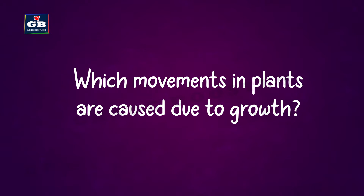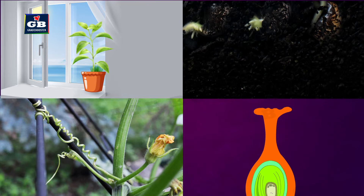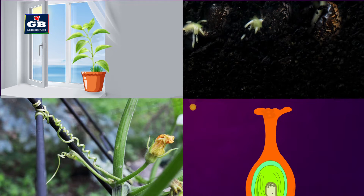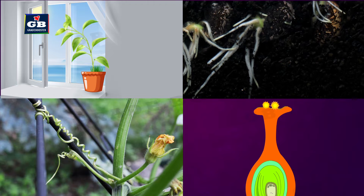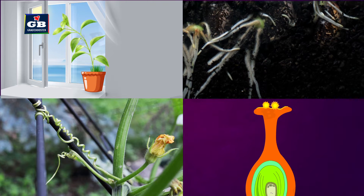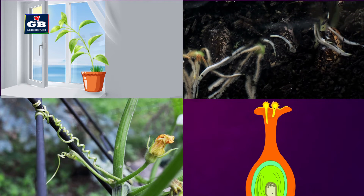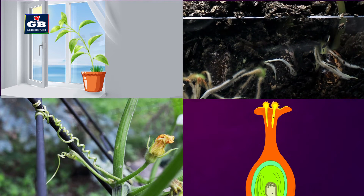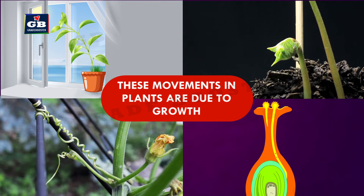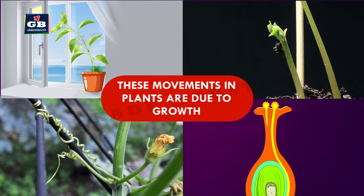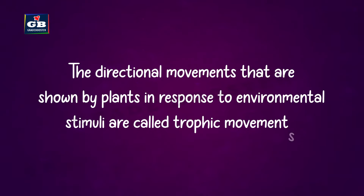Which movements in plants are caused due to growth? The movements in plant parts like stem moving towards sunlight, roots growing towards soil, tendrils coiling around some support, and pollen tube growing towards the ovule are caused due to growth. In fact, these movements are the responses for different stimuli. The directional movements shown by plants in response to environmental stimuli are called tropic movements.